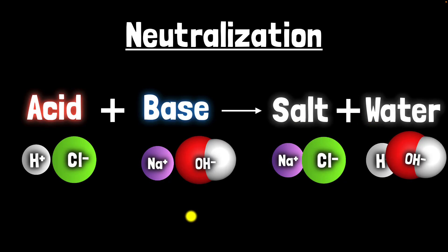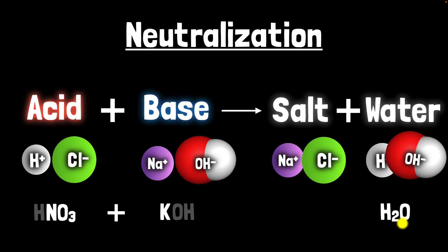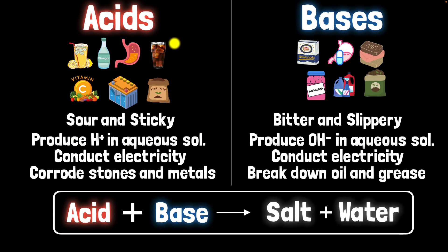This is true for any acid and base. For example, consider acid HNO3 — nitric acid — reacting with KOH, potassium hydroxide, which is a base. Again, H and OH combine to give you water H2O, and K and NO3 combine to give you a salt. So you get salt and water. Remember, NaCl is one kind of salt — there are many other salts.